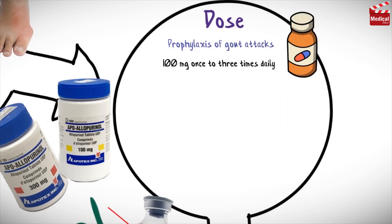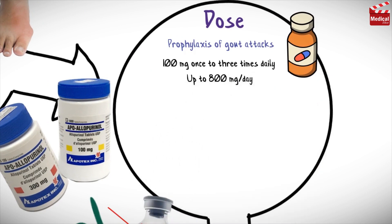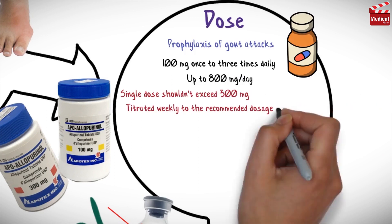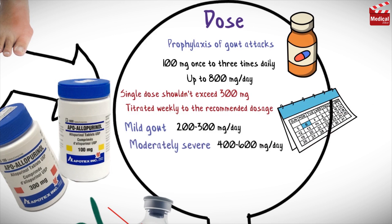The usual dose for prophylaxis of gout attacks is 100 milligrams once daily to three times daily, up to 800 milligrams per day. Note that a single dose shouldn't exceed 300 milligrams, and dose should be weekly titrated to the recommended dosage. The usual dose for mild gout in adults is 200 to 300 milligrams per day, and for moderately severe gout is 400 to 600 milligrams per day.